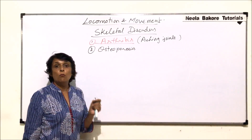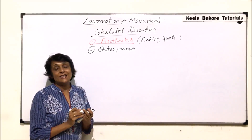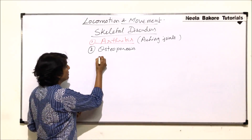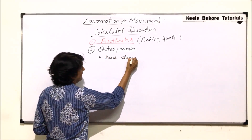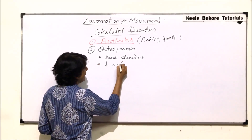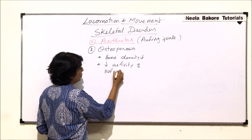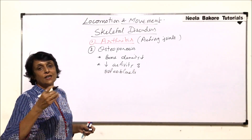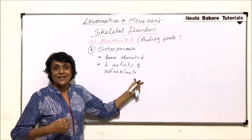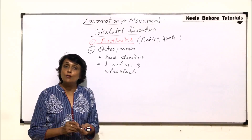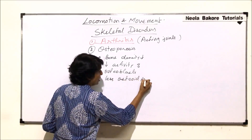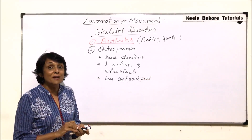Osteoporosis is the most common bone-related disorder in old age. In osteoporosis, the bone density decreases, and this is due to decreased activity of osteoblasts. Osteoblasts are the cells which give rise to osteocytes and help in formation of the matrix. Because of less activity of osteoblasts, less osteocytes are produced and the matrix would be produced less — so there is less osteoid production.